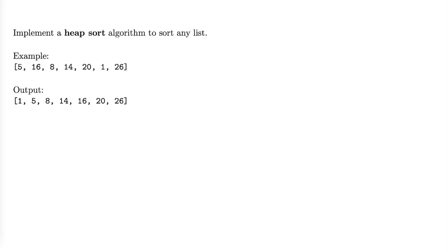In this case we're going to implement this using a max heap. Let's start off by drawing this array as an incomplete heap — we'll draw it as a binary tree but we won't actually heapify it until the next step. So we have 5 at the beginning, then 16, then 8, and under 16 we have 14 and 20, and under 8 we have 1 and 26.